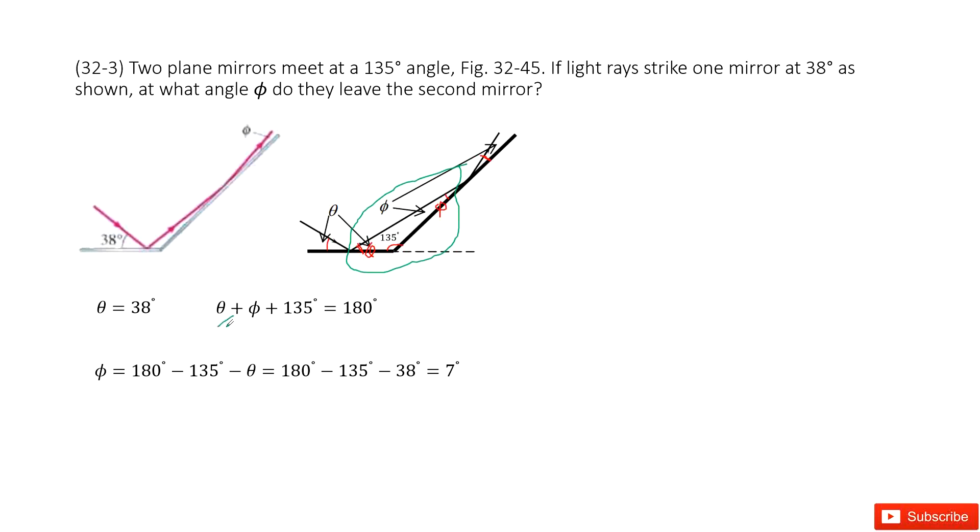As you can see, theta is given and phi is the only unknown quantity in this equation. So we can get the equation for phi, input all the given quantities, and get the answer: 7 degrees. Thank you.